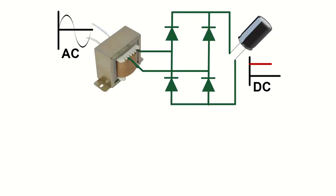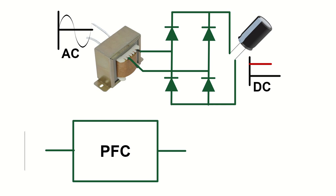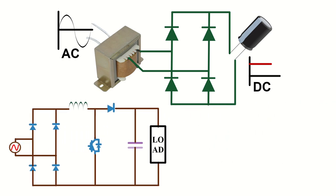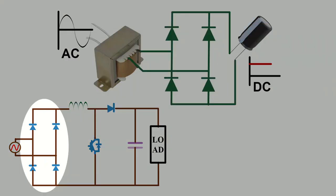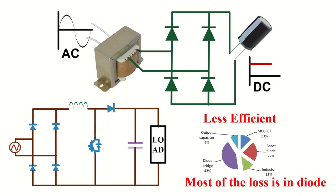In most AC to DC power supplies, there is a power factor correction circuit at the front end to convert the AC voltage to DC voltage. Boost converter is the most common topology used for this purpose. But presence of diode bridge rectifier at the input of the PFC boost converter makes the circuit less efficient.